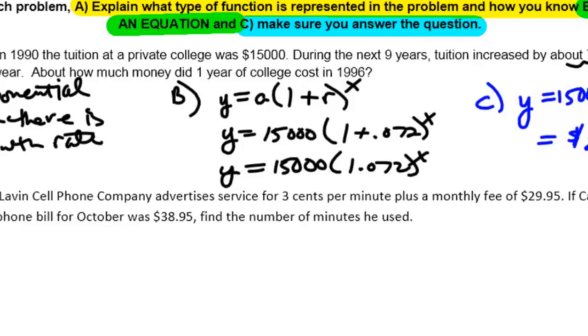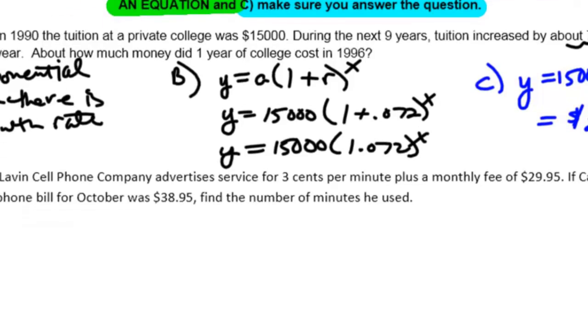Let's take a look at example 2. Lavin Cell Phone Company advertised a service for 3 cents per minute plus a monthly fee of $29.95. If Cameron's phone bill for October was $38.95, find the number of minutes he used.